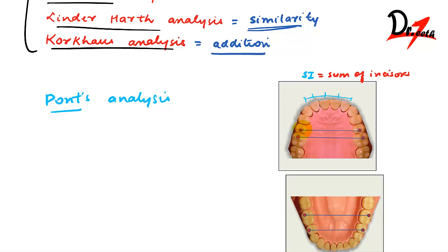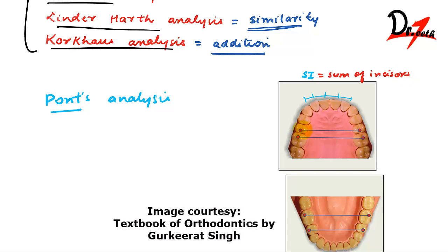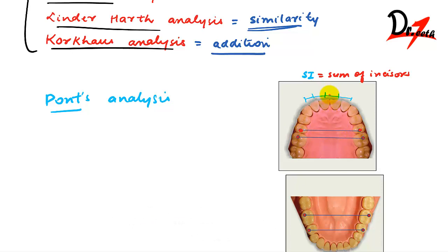When measuring premolar width, it has to be measured from the distal end of the occlusal groove. This is the distal end because it is away from the midline. He measured from the distal end of the occlusal groove of one premolar to the other premolar and called it the MPV — Measured Premolar Value.